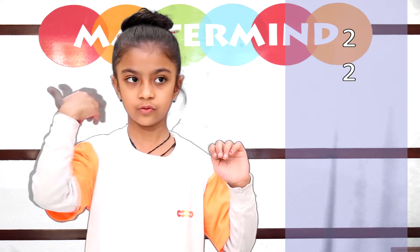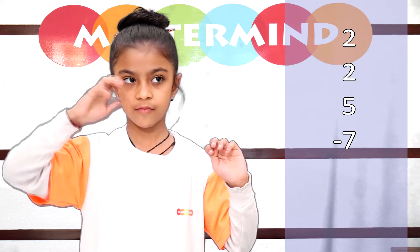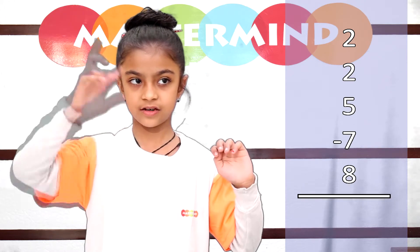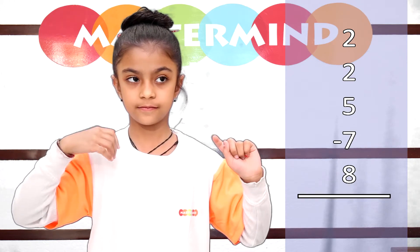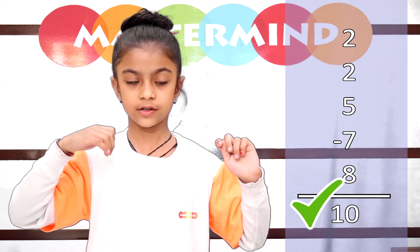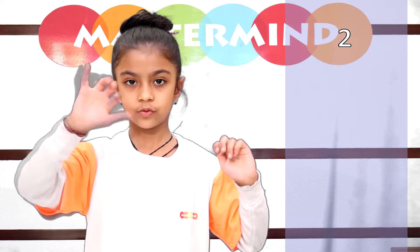2, 2, 5, minus 7, 8. Answer is 10. Right.